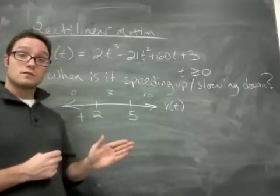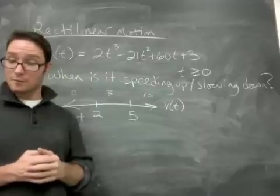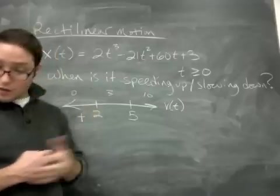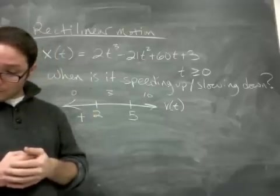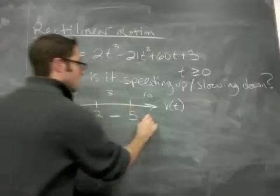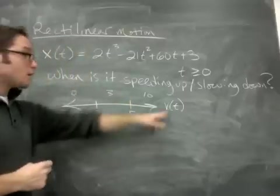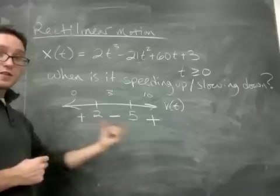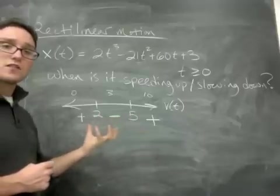You're moving to the right or moving forward, depending on how you think about it. If I plug in 3, I believe you get a negative number. And if you plug in 10, you get a positive. And again, I'm plugging into velocity. So these are the signs. What I need to do is compare these to the acceleration.